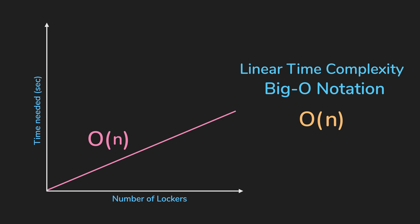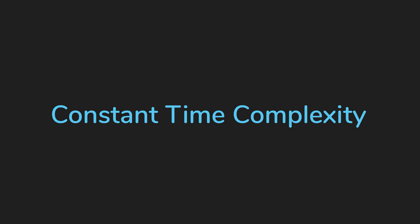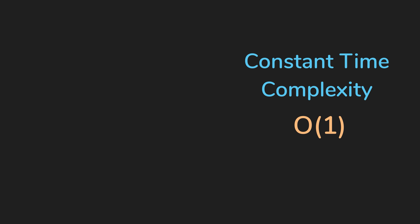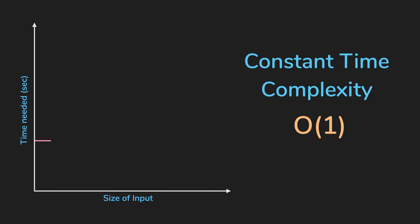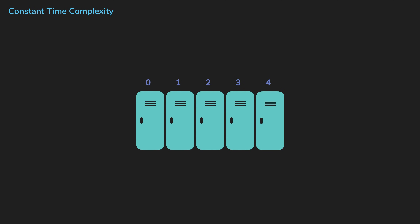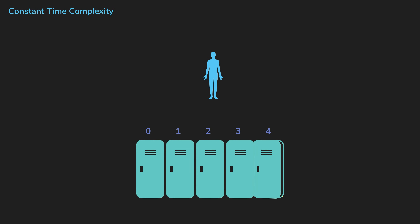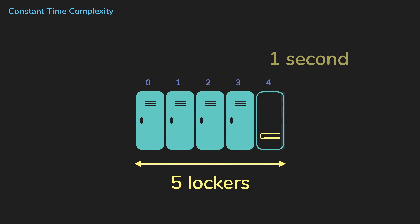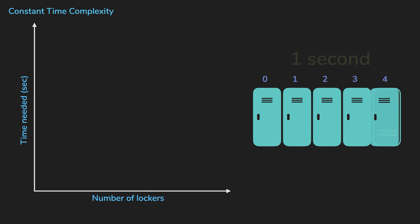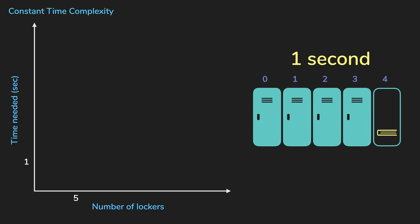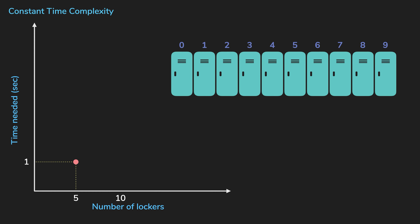Now let's look at another complexity, which we call constant time, O(1). Algorithms with constant time are considered to be good because no matter how large the input gets, it will still take the same time to perform a certain task. If we go back to the lockers, this time let's say we have a psychic person who can guess which locker has the book. If retrieving the book takes one second and there are five lockers, it will take one second. If there are 10 lockers, still one second. And then 100 lockers, still one second.